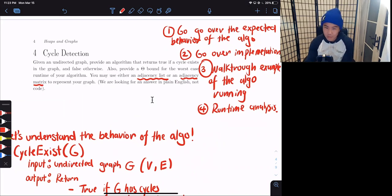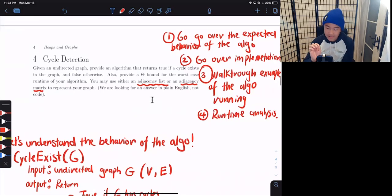So in this walkthrough, we will first outline the expected behavior of the algorithm. Then we will go over the implementation of the algorithm. After that, I will walk through an example of the algorithm in action. And last but not least, I would do a runtime analysis of this algorithm.